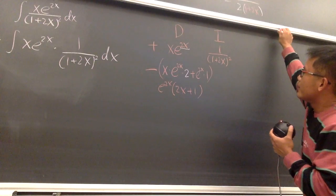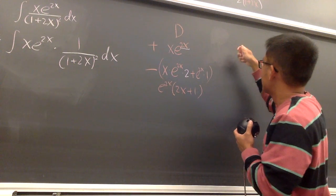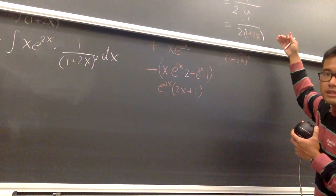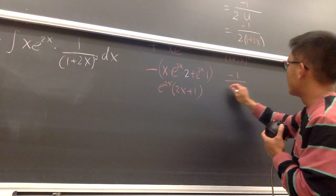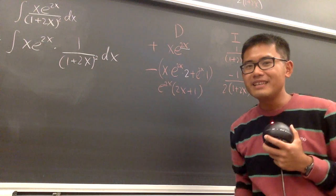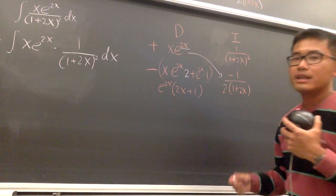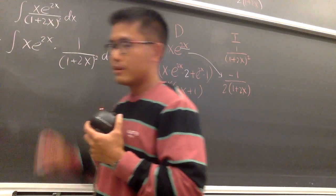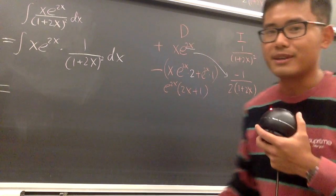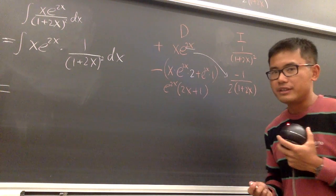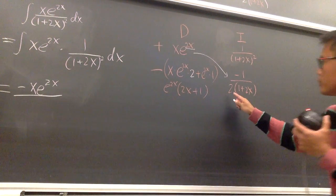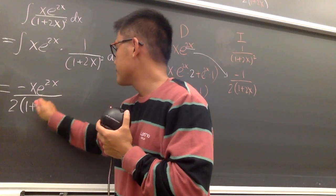So when we integrate 1 over 1 plus 2x squared, we get negative 1 over 2 times 1 plus 2x. Now, the diagonal in the DI method gives the first part of the answer. This times that is the first part: we have negative x e to the 2x over 2 times 1 plus 2x. Notice the negative sign comes through here. So we write it down as negative x e to the 2x over 2 times 1 plus 2x.